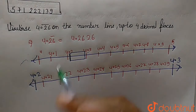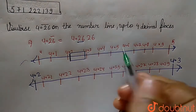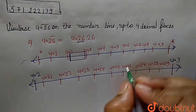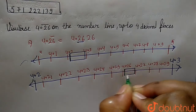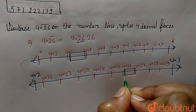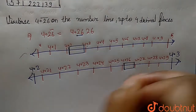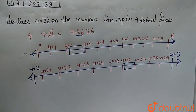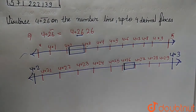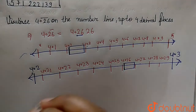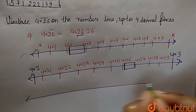Looking at the next decimal place, 4.26 bar gives us 4.266, so 4.266 will lie in between 4.26 and 4.27. Now let's draw a number line from 4.26 to 4.27.